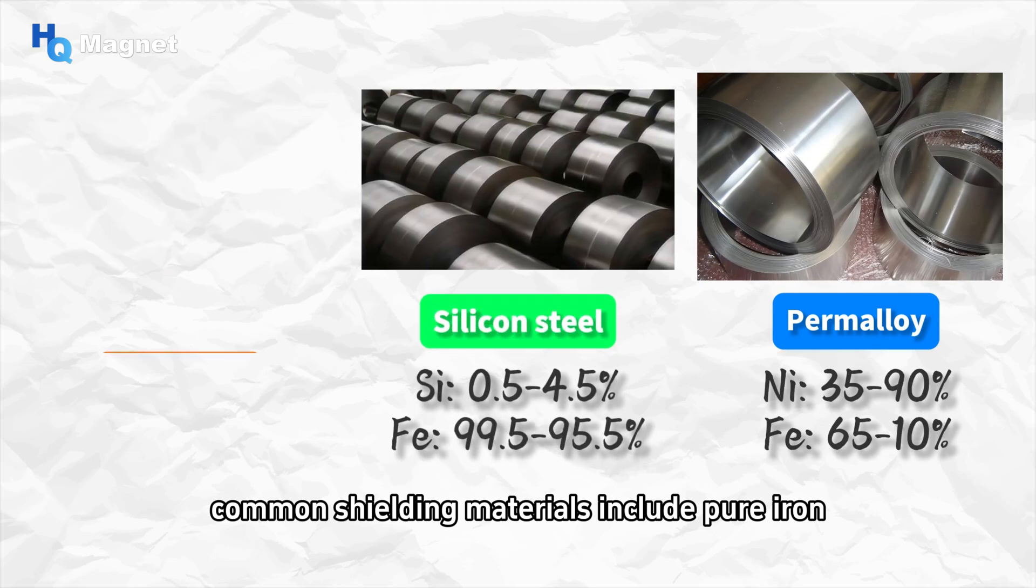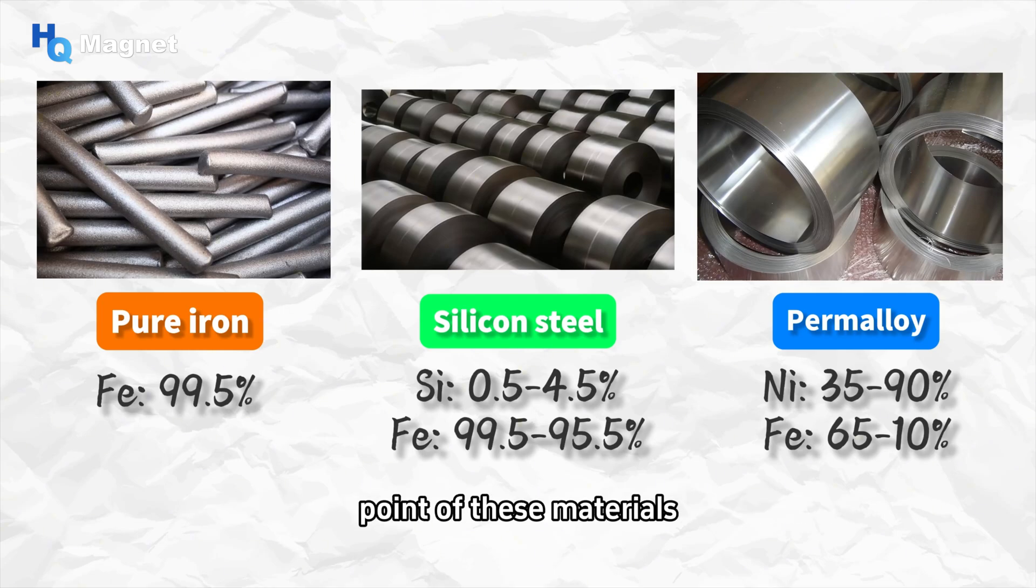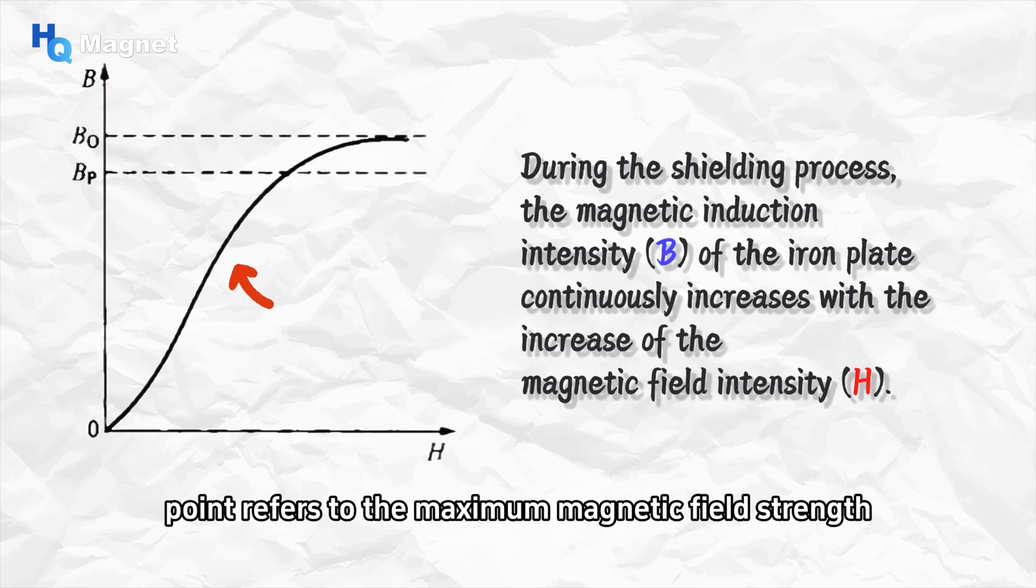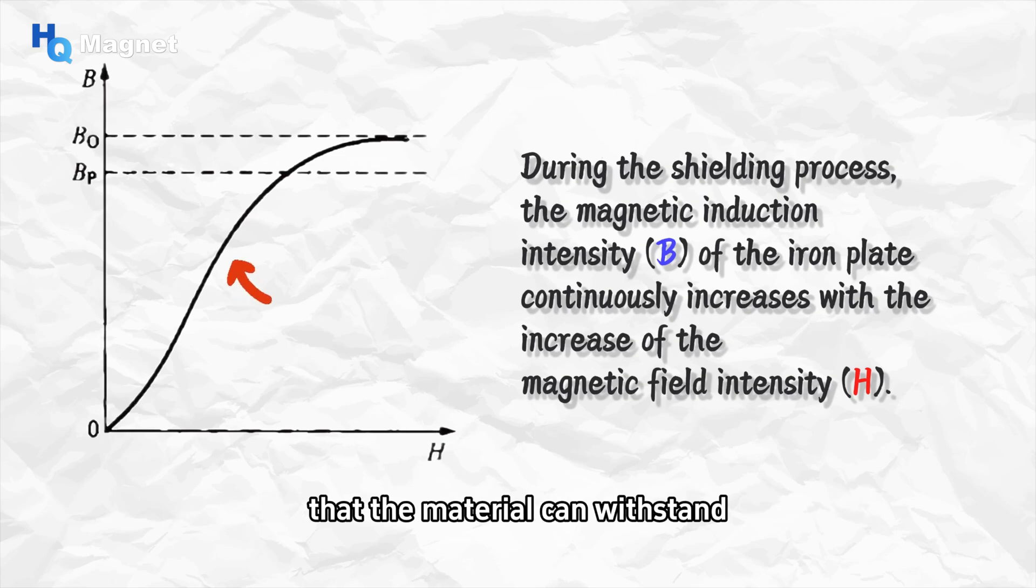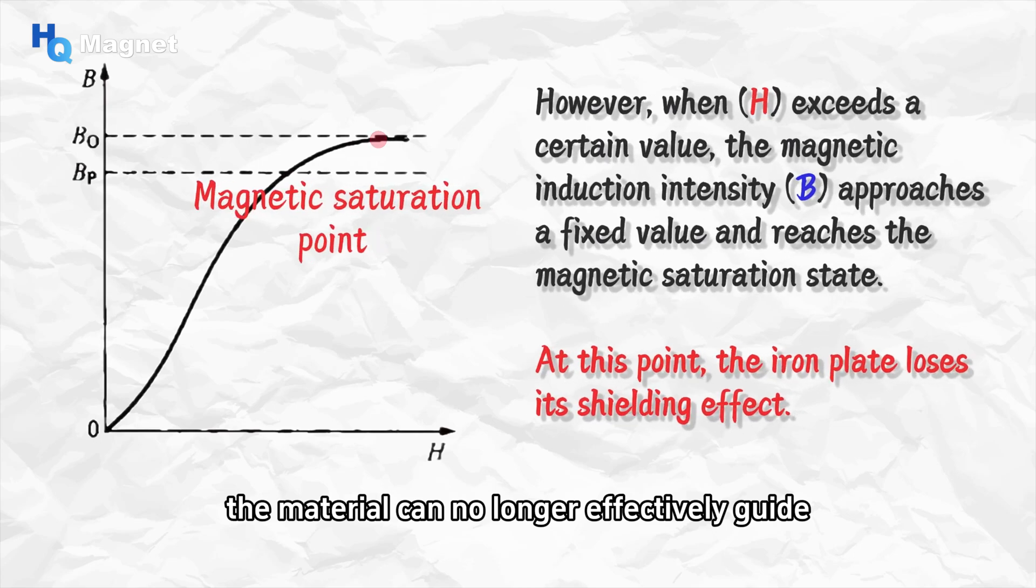Common shielding materials include pure iron, permalloy, and silicon steel. Besides magnetic permeability, we also need to consider the magnetic saturation point of these materials. The magnetic saturation point refers to the maximum magnetic field strength that the material can withstand. If this value is exceeded, the material can no longer effectively guide more magnetic field lines and its magnetic permeability will decrease significantly.